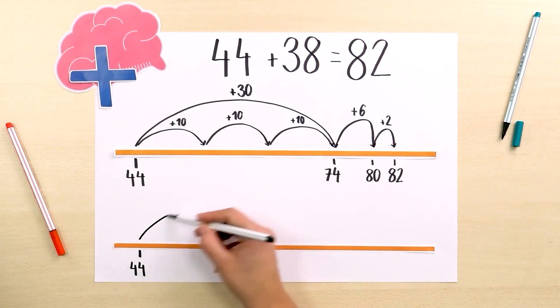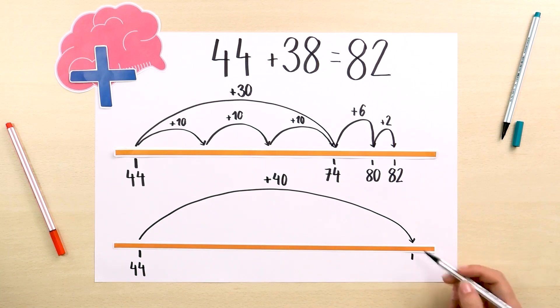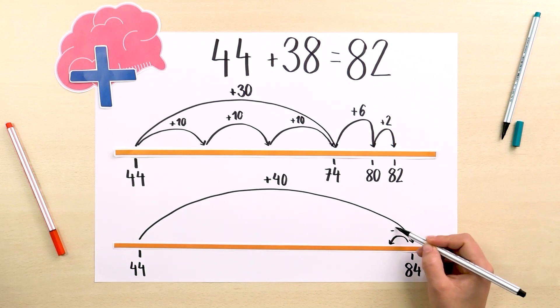But we could have done it another way. From 44, we make a jump of 40 forward to get to 84, and then a jump of 2 backwards to get to 82.